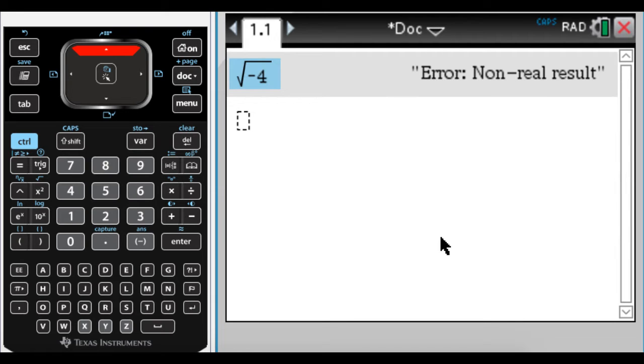But now that I've changed that, I can press, so I paste that down, I can press enter, and I get 2i instead of getting a non-real result. I mean, the calculator knew it was a non-real result, but it didn't want to tell me what it was. But by changing it from real to rectangular, so it's going to allow for complex solutions now, or values, I should say.